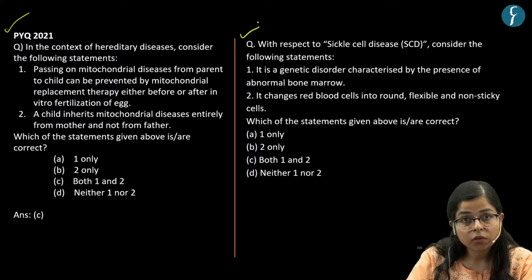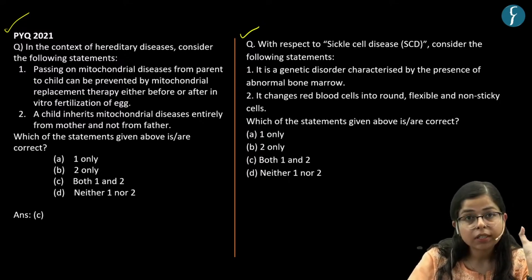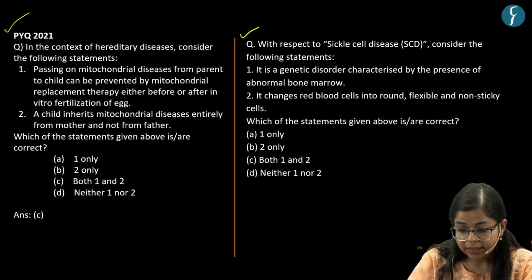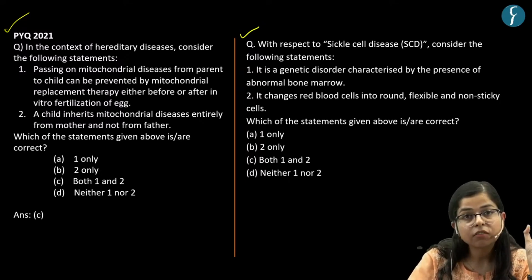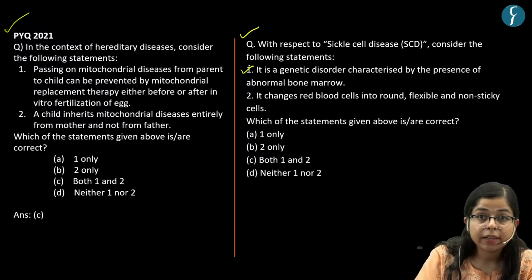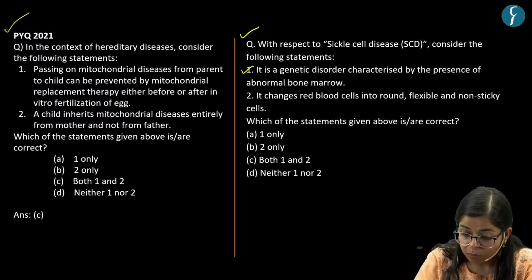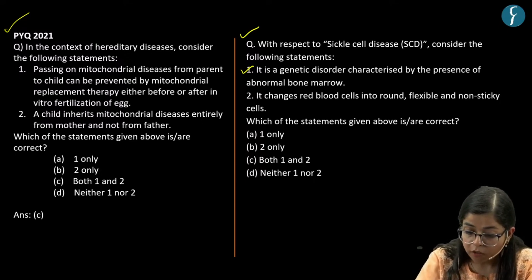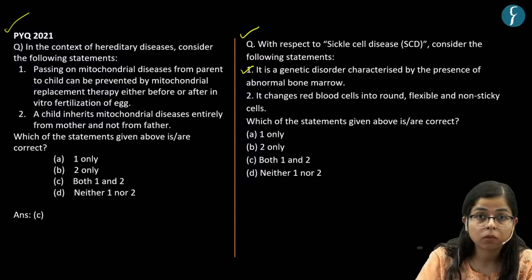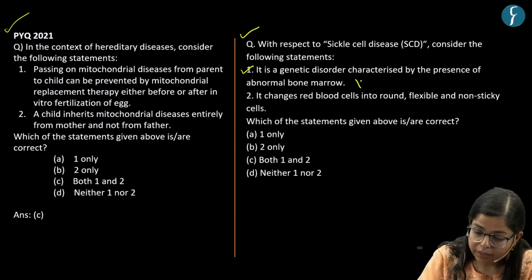Let's solve our first question which says: with respect to sickle cell disease, consider the following statements. Our first statement is: it is a genetic disorder characterized by the presence of abnormal bone marrow. This is an incorrect statement.